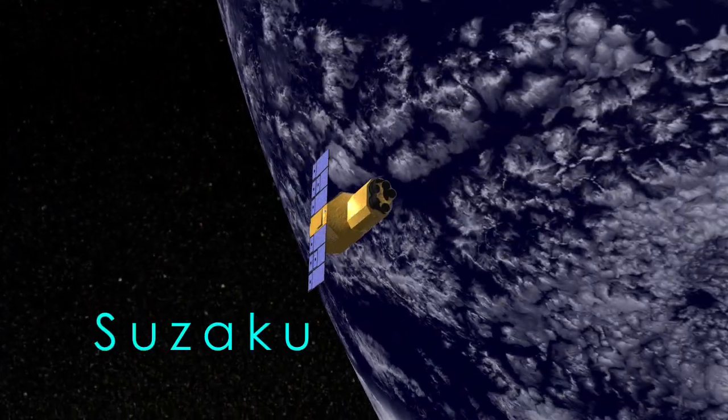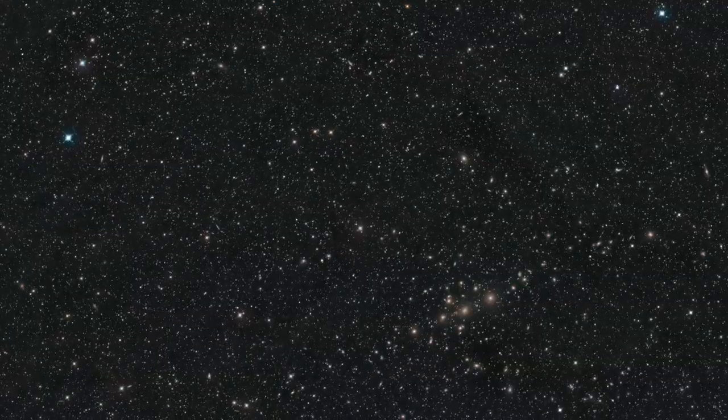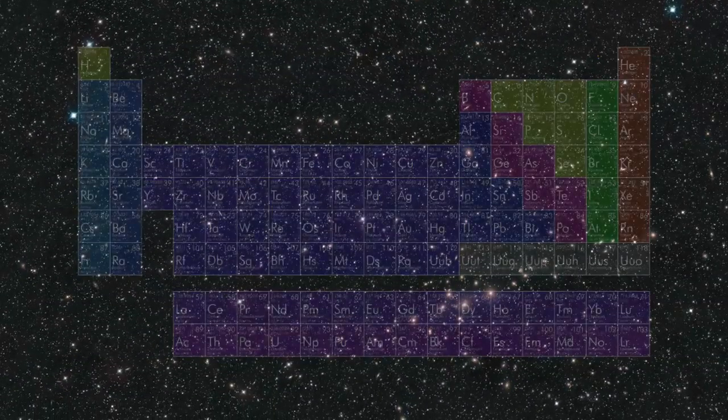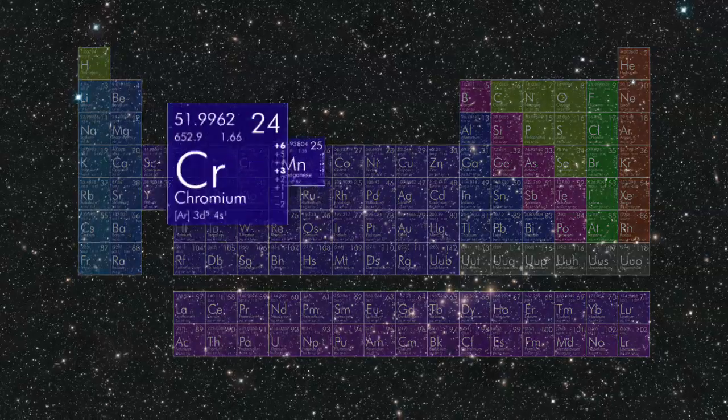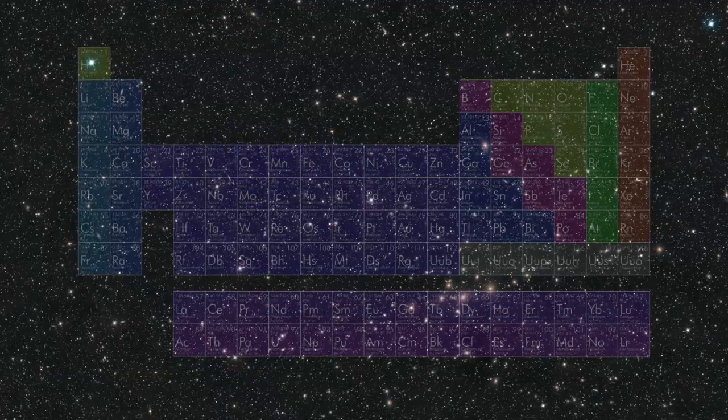Suzaku is an orbiting X-ray observatory operated jointly by NASA and the Japanese Space Agency. It recently spotted the metals chromium and manganese in intergalactic space for the first time. It's the largest known concentration of rare metals in the universe.